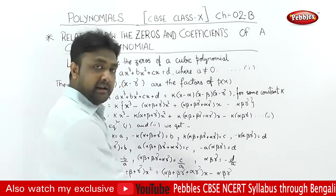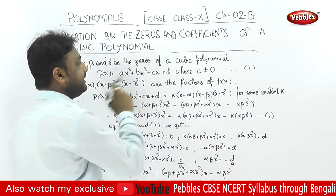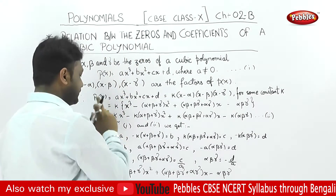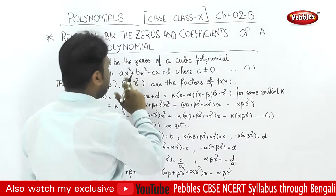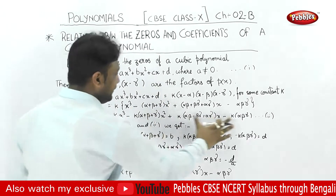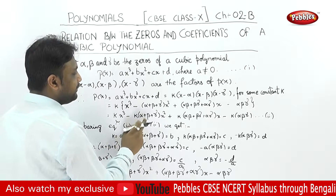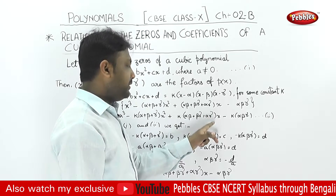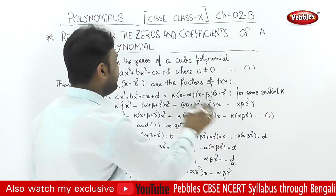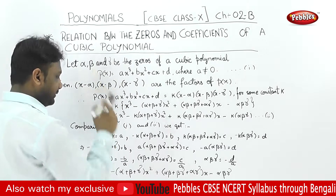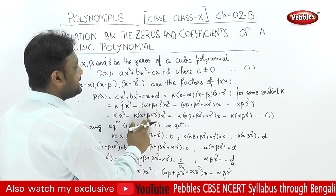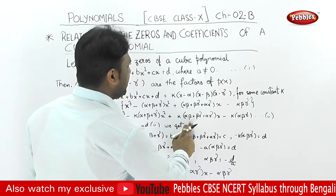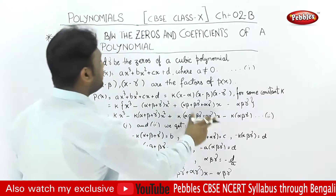Comparing this expanded expression with the standard form ax cube plus bx square plus cx plus d, we get: k equals to a, minus k into (alpha plus beta plus gamma) equals to b, k into (alpha beta plus beta gamma plus alpha gamma) equals to c, and minus k into alpha into beta into gamma equals to d.